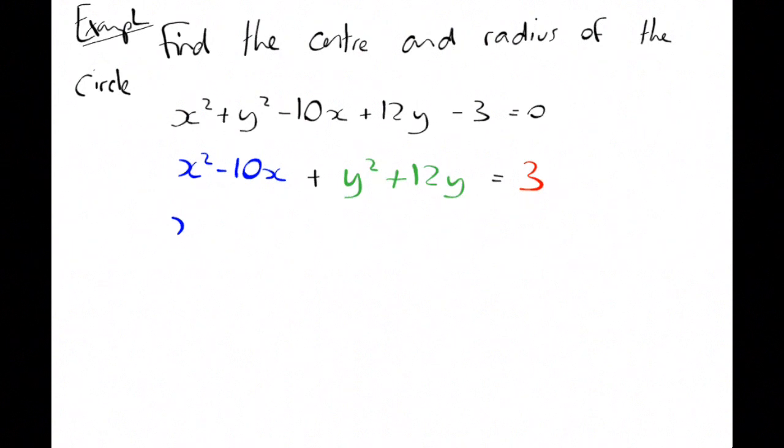Completing the square on this. I half the coefficient of the x. So I get x minus 5 all squared. And then I have to take away that 5 squared. So I take away 25. Same for the y's. Y plus half of the 12. So it's y plus 6 all squared minus the 6 squared. So that's minus 36. And that still equals 3.